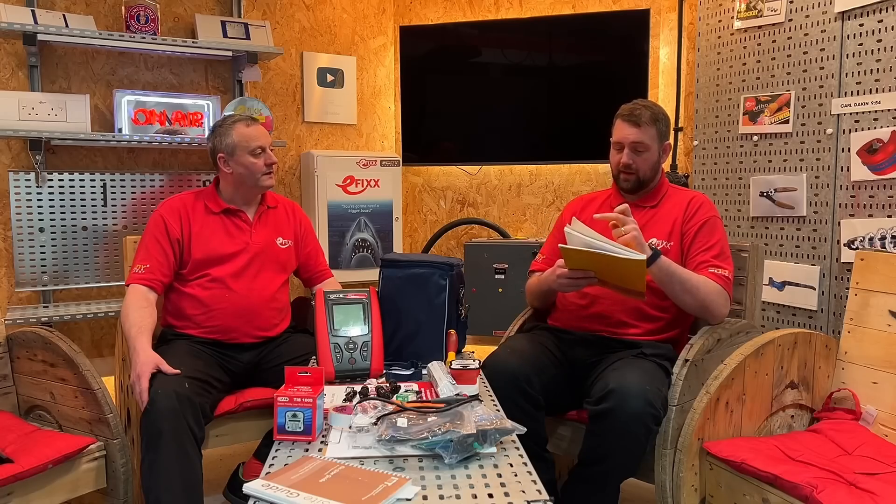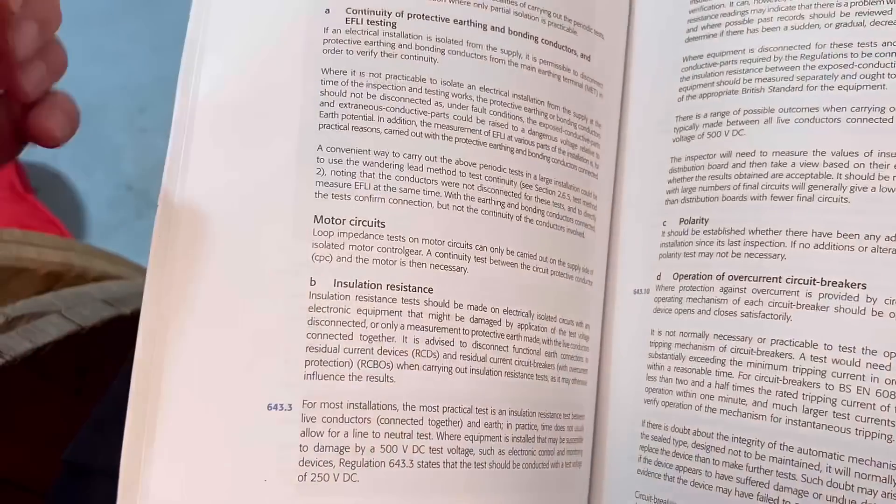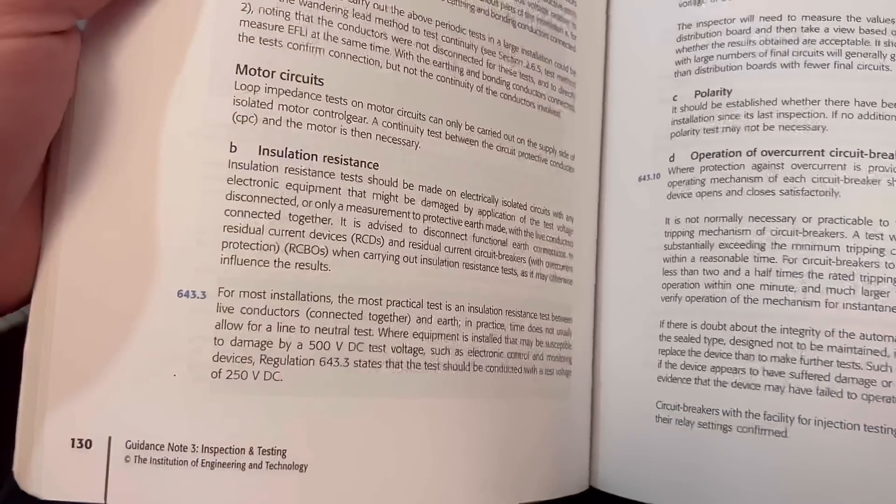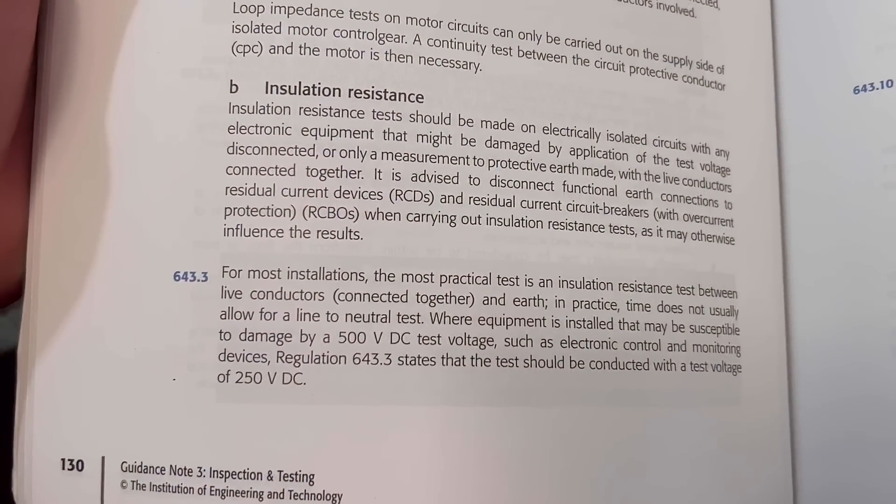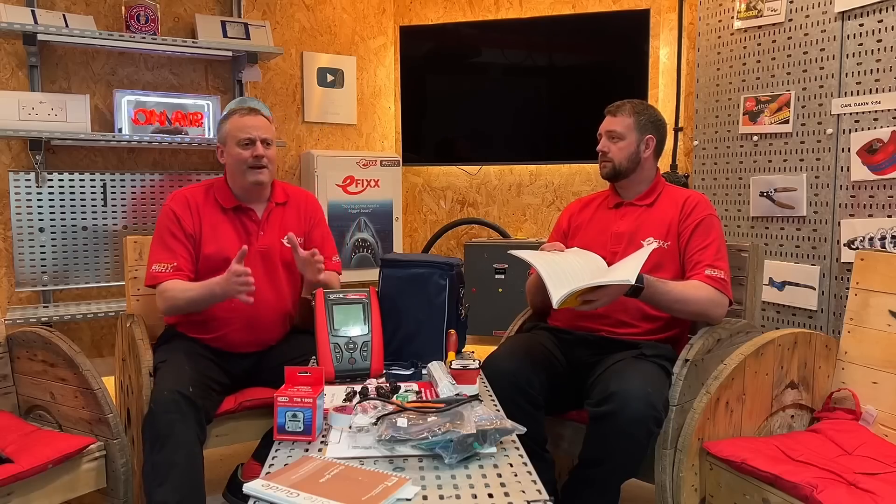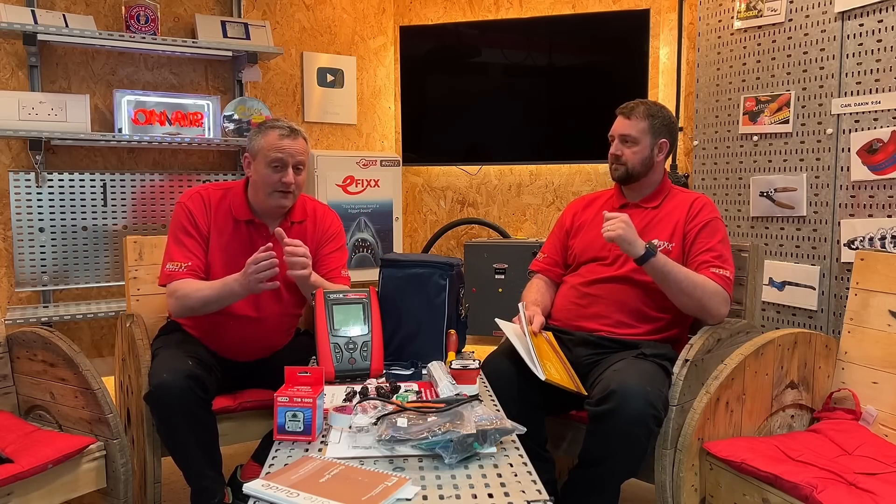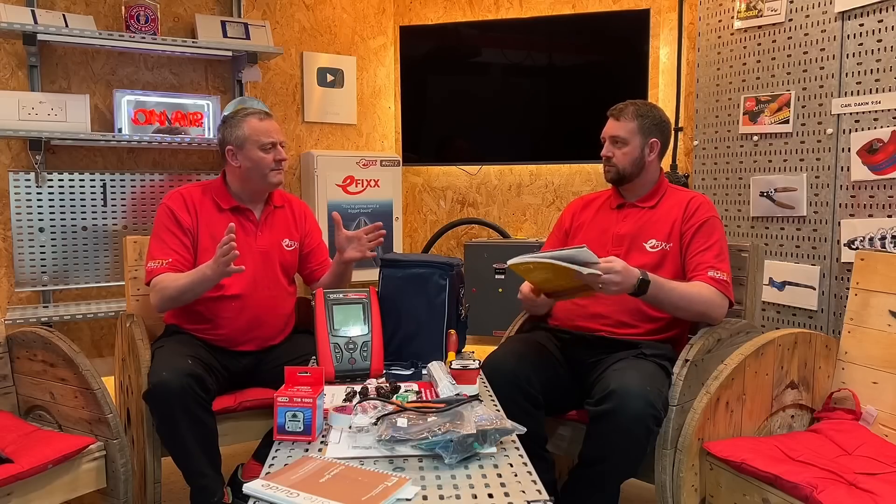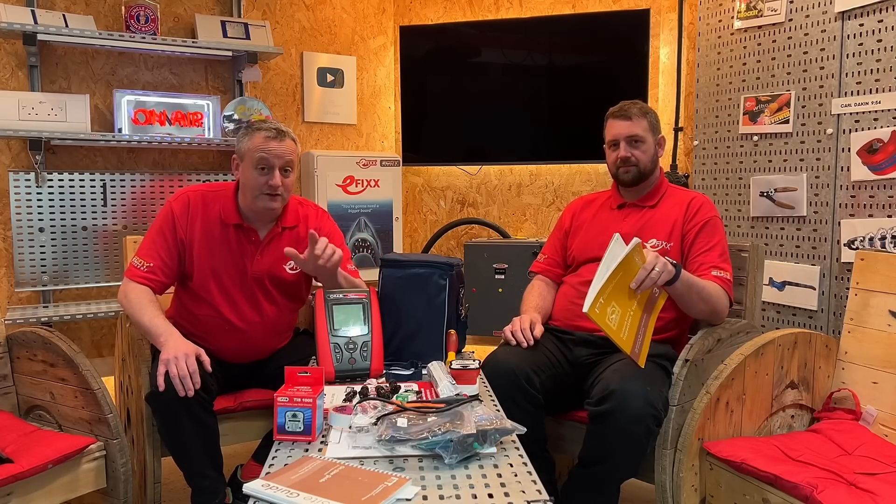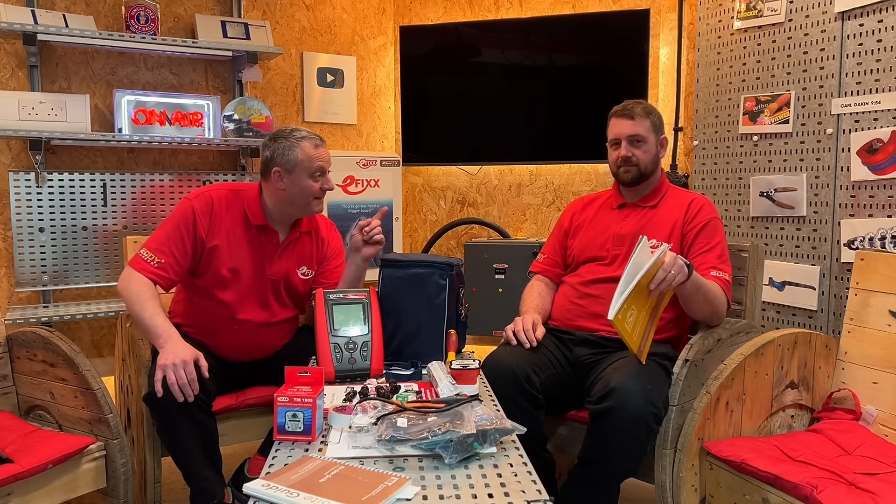However, I've been flicking through Guidance Note 3 and it says here if I link together line and neutral and test to earth, it should be all right. Yeah, but that means we haven't tested between our live conductors. I trust you Rick, but wouldn't it be nice if your multi-function tester's got your back in case you've let me down?